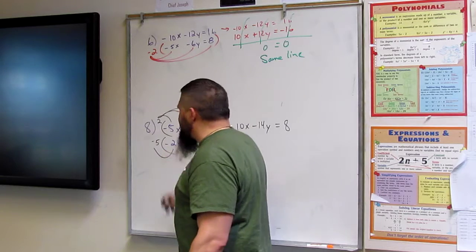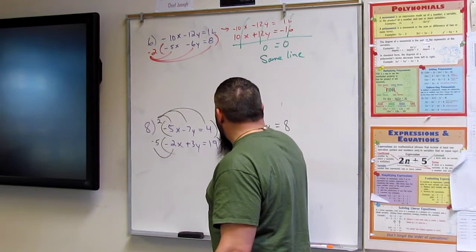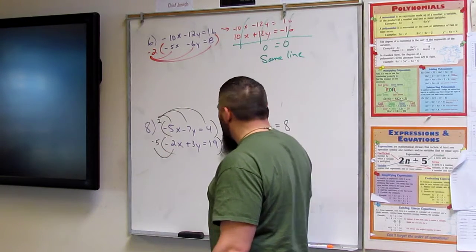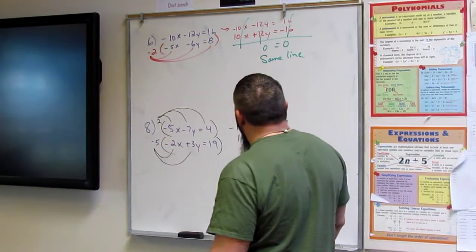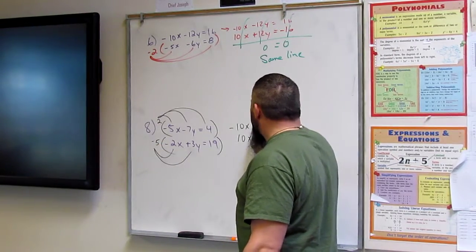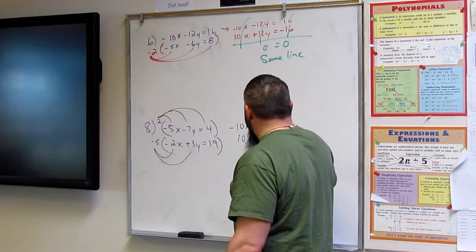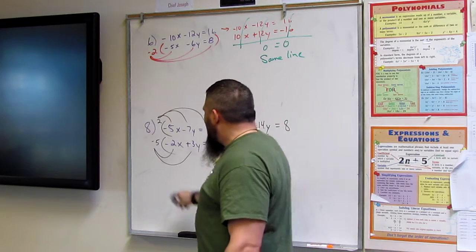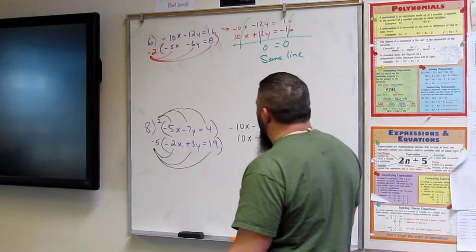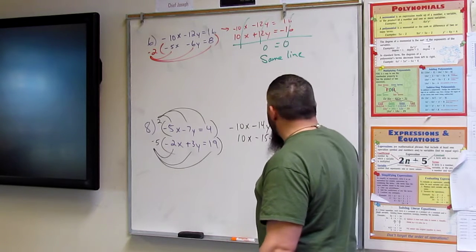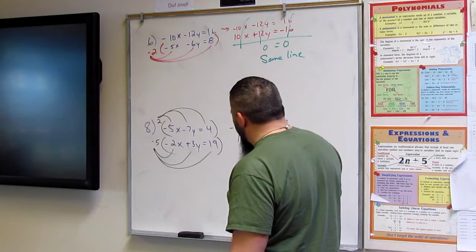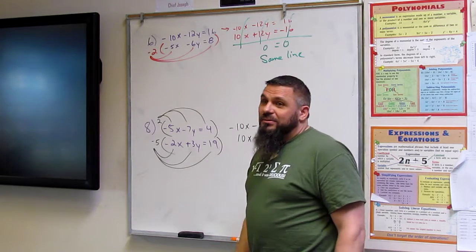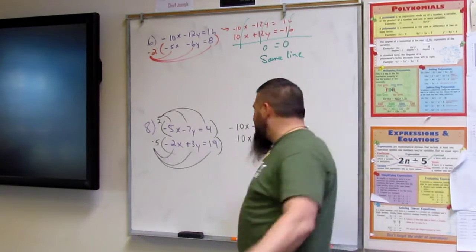Negative five times negative two is positive ten. Negative five times three is negative fifteen. And negative five times positive nineteen is, what is that? Negative. Who said it? Ninety-five? Nice. I like it.